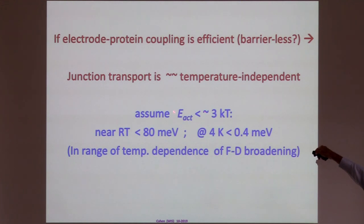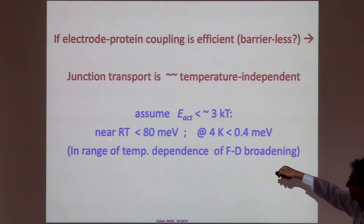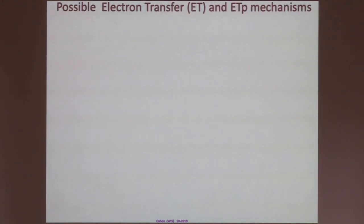Now, what are we talking about? Let me assume that an activation energy less than 3 kT, we cannot measure. That means that it would be less than 80 milli-electron-volt at room temperature, but at 4K, it's already 0.4 milli-electron-volt. And therefore, the question if you can still talk about meaningful activation energy becomes relevant. These temperature dependencies, by the way, are well in the range of the Fermi Dirac broadening that we heard about earlier, which is the normal temperature dependence of tunneling.